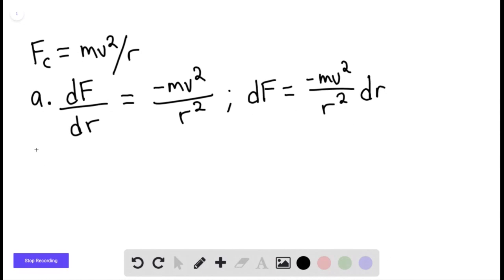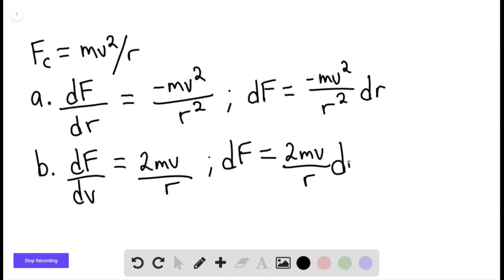For part b, the derivative of the force with respect to v, we can say that this is going to be equal to 2mv over r, where df would then equal 2mv over r times dr. Rather, my apologies, dv.